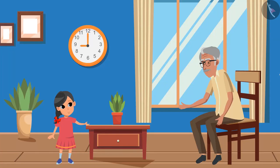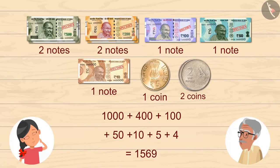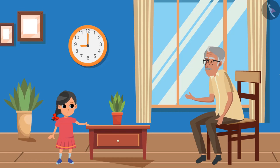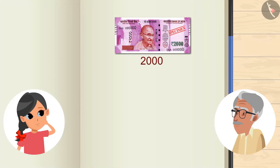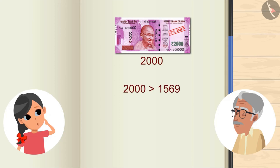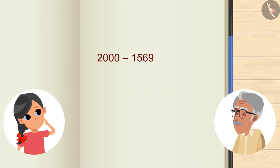Very good, Gudi. But we have used so many notes in this. Can we make the whole amount of 1,569 by using fewer notes? But Grandpa, how can we make 1,569 using fewer notes? Can we use a ₹2,000 note for this? But Grandpa, it's more than 1,569. How much more is it? If we subtract 1,569 from 2,000, we will be left with 431 rupees. Wow, Grandpa, it worked with only 1 note!